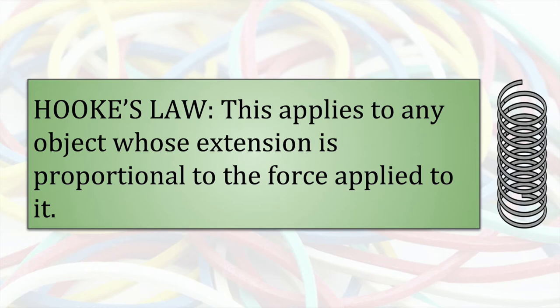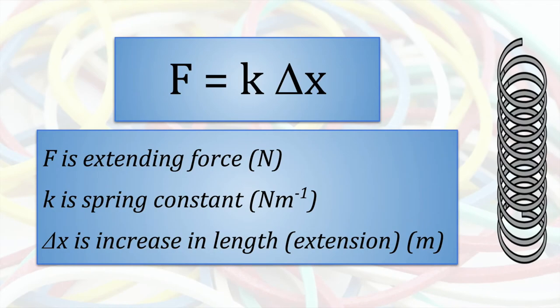An object which obeys Hooke's law has an extension proportional to the force applied to it. Here is a formula. The force is proportional to the increase from the unloaded length. There is a constant of proportionality k which tells us how many newtons of force are required to extend the spring by one meter.